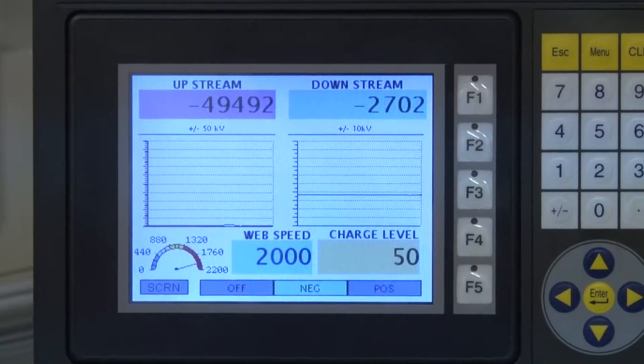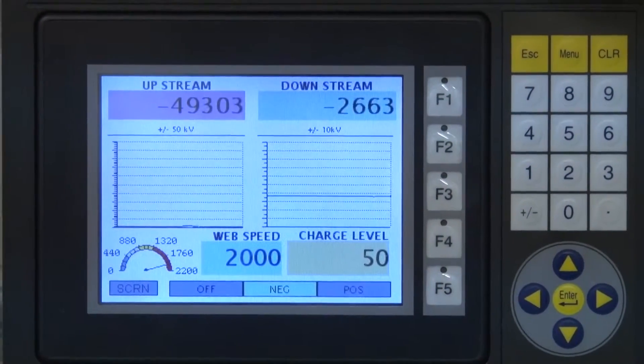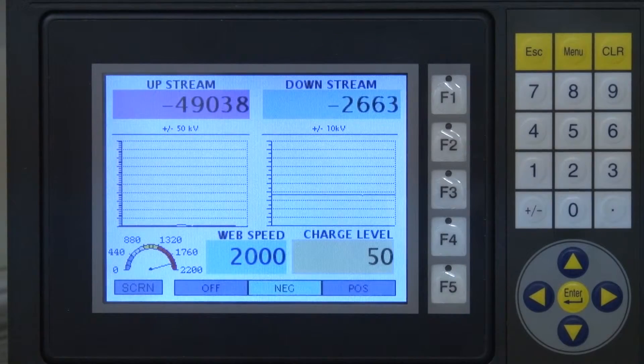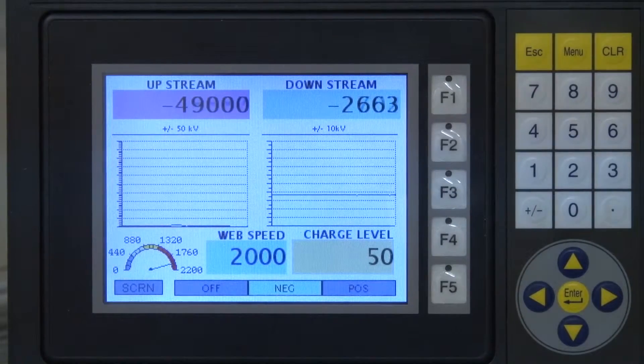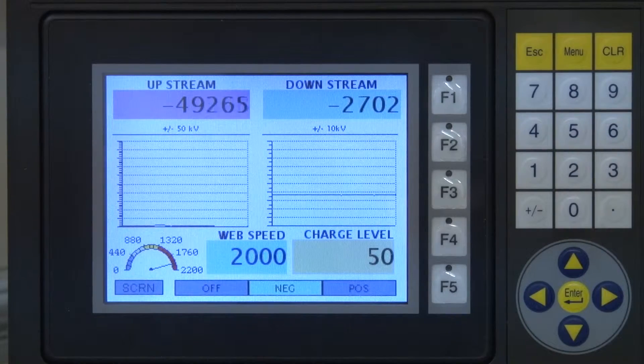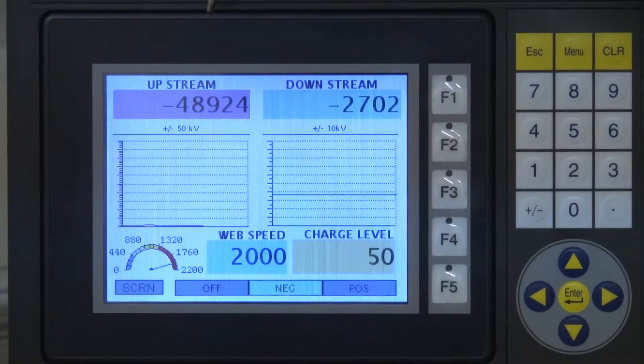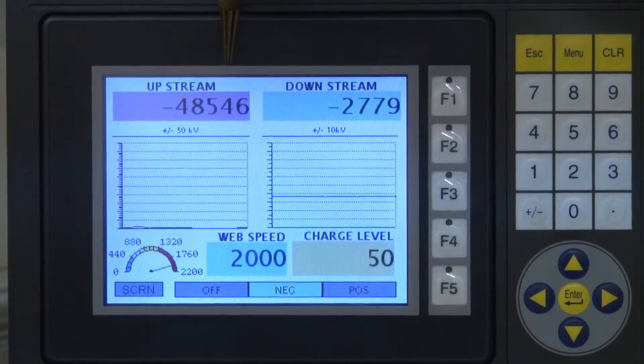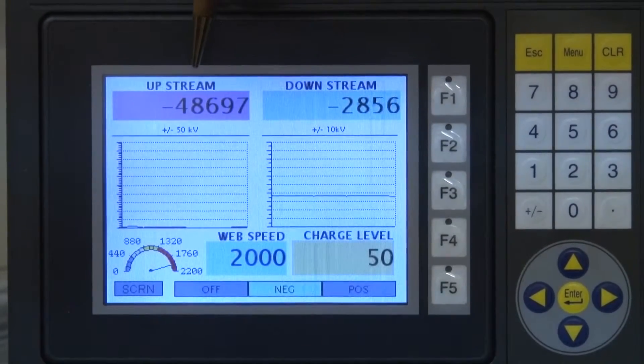I've established some test conditions on the Dynamic Test Stand that will let us evaluate the auto-tune, the fixed, the auto-tune, and the closed-loop feedback modes of the IQEasy Sensor. You'll notice that upstream from the neutralizing bar, I have negative 50,000 volts established.